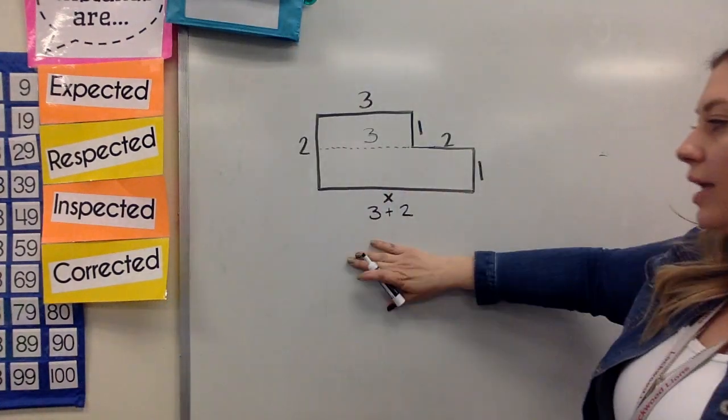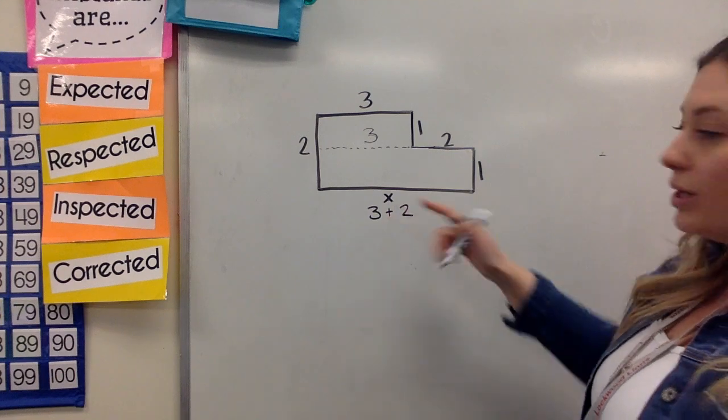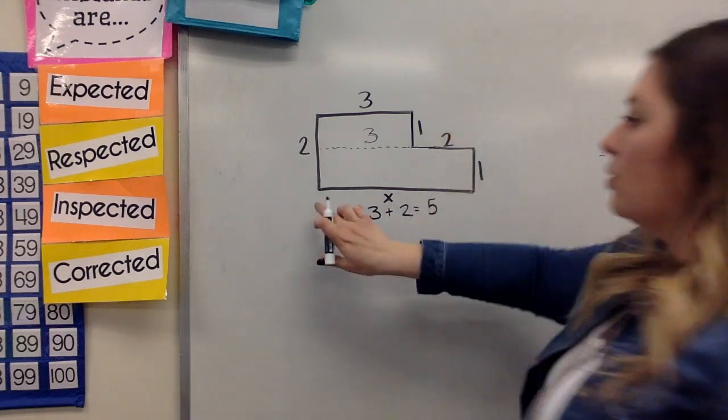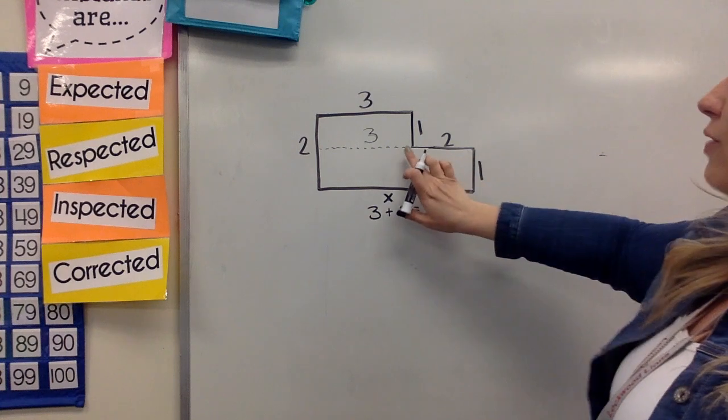Okay, so when I'm looking at that, I know right away, three plus two is five. So this side length down here is five.